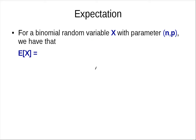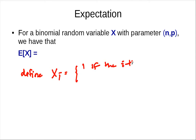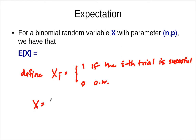Let's compute the expected value of a binomial random variable. Define x_i to be 1 if the i-th trial is successful and 0 otherwise. Then x equals the sum of x_i. Using linearity of expectation, and since each x_i is a Bernoulli with mean p, you get that the expected value of x is n times p.